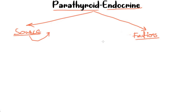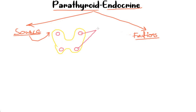So let's take on the source of parathyroid hormones — from where they are released. We all know that we have the main gland, which is the thyroid gland. I am taking the posterior view of the thyroid gland. On the posterior aspect of the thyroid gland there are four parathyroid glands which are embedded in the thyroid tissue.